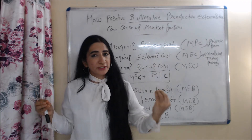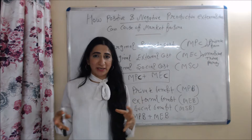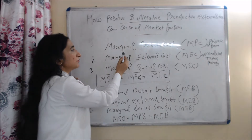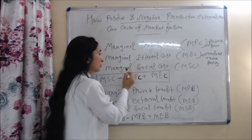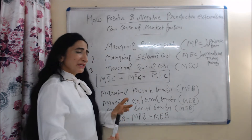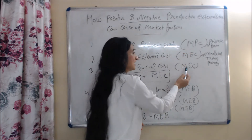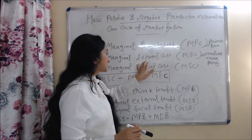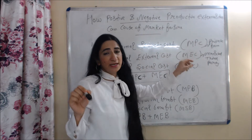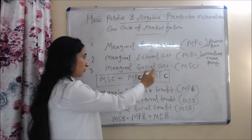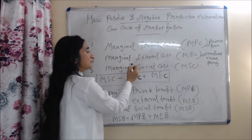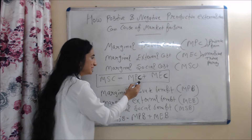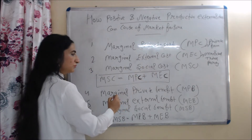Now we talk about how negative and positive production externalities can cause market failure. Before this, you need to understand a few terms. First, marginal private cost, marginal external cost, and marginal social cost — in short, MPC, MEC, and MSC. Marginal private cost is the marginal cost of private firms. Marginal external cost is the marginal cost of the unrelated third party. And marginal social cost is MSC = MPC + MEC.